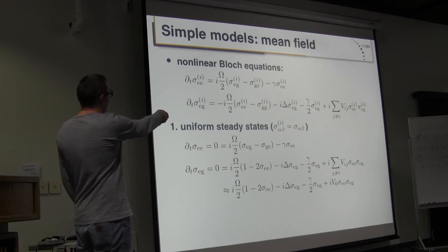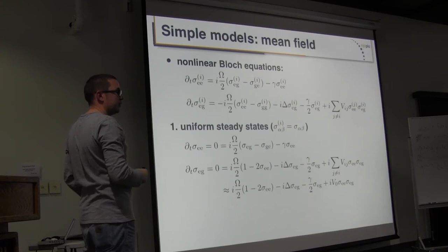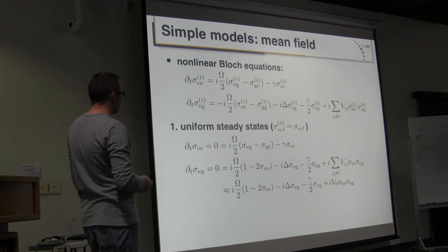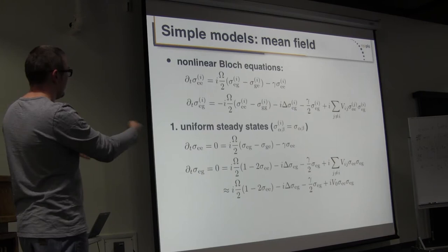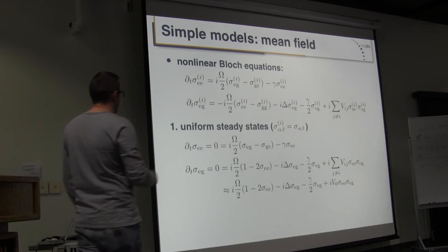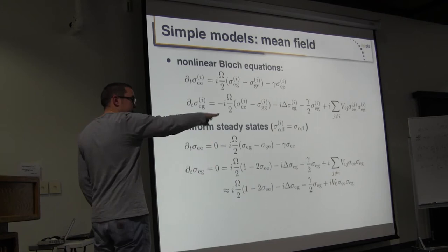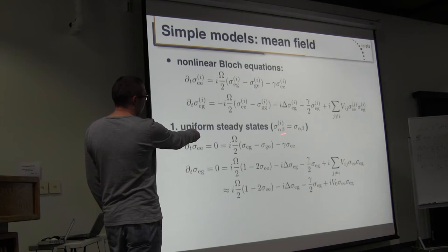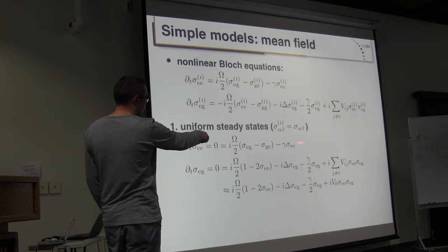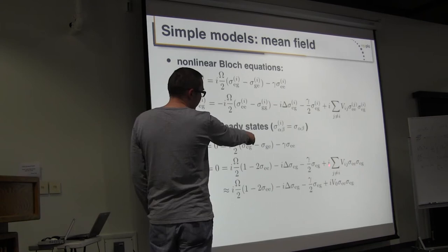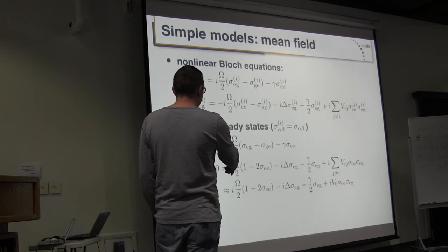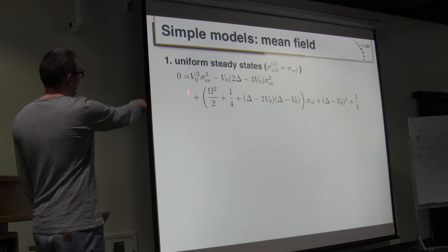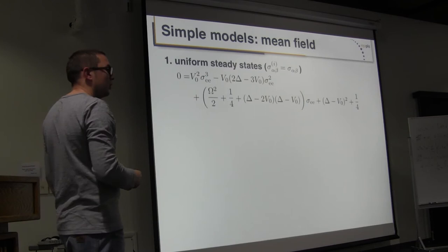Looking at the steady states: simply set the derivatives to zero. We are also looking for uniform states - where the system would always have a uniform density if we have an extended lattice, meaning all atoms do the same thing, with flat density and flat coherence. Setting all operators equal for each atom reduces the 2N equations to just two equations.